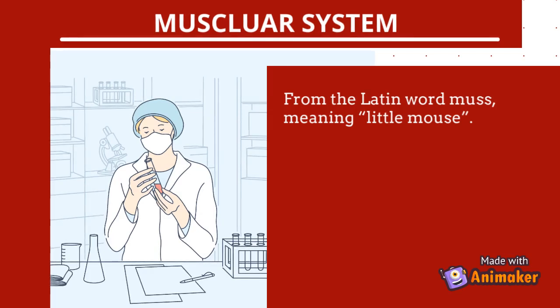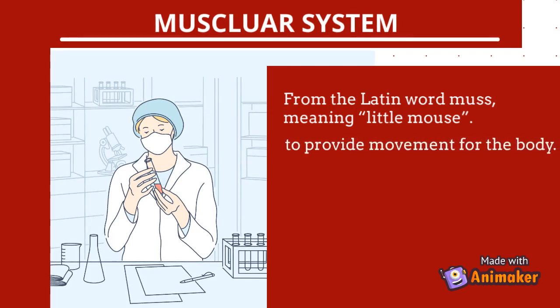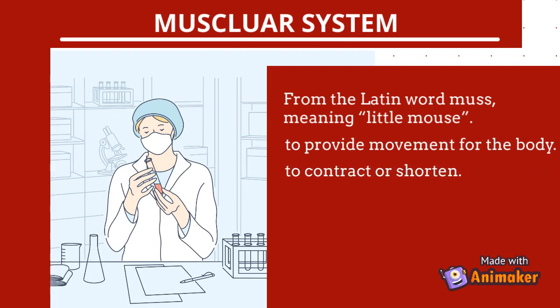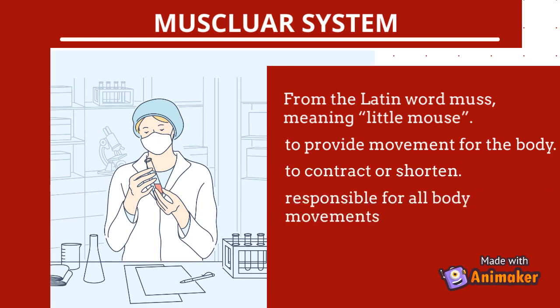The primary purpose of the muscular system is to provide movement of the body. The essential function of muscles is to contract or shorten — a unique characteristic that sets it apart from other body systems. Muscles are responsible for all body movement and can be thought of as the machines of the body.